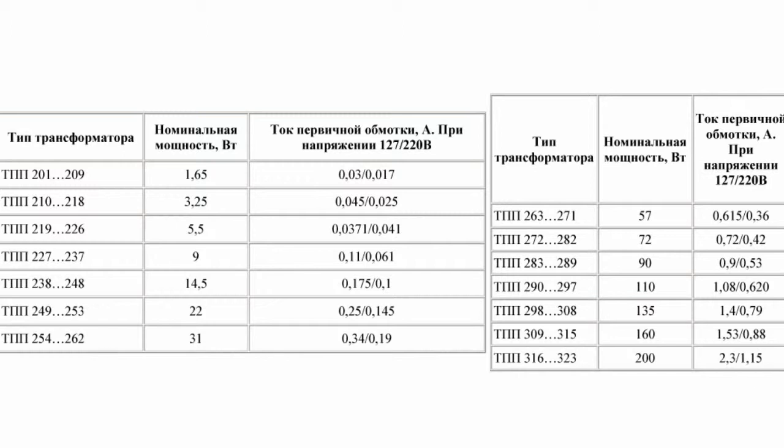Nominal current loads of the secondary windings are 1.00 to 24 amperes. TSC series transformers are recommended to be operated at temperatures of 60 to 85 degrees centigrade and humidity of up to 98%. Depending on the power, TSC transformers are manufactured in two structural types: